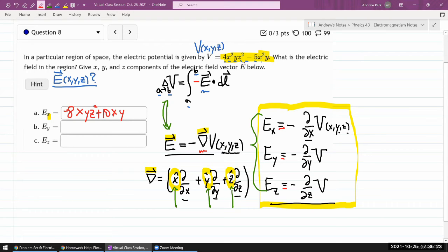Let me do my y component. Y has, it's a linear factor, so it's going to be minus, not forgetting the minus sign, 4x²z² plus, with one additional minus sign, 5x².